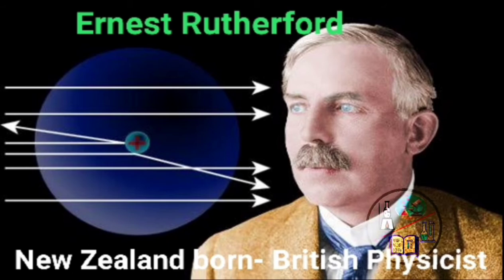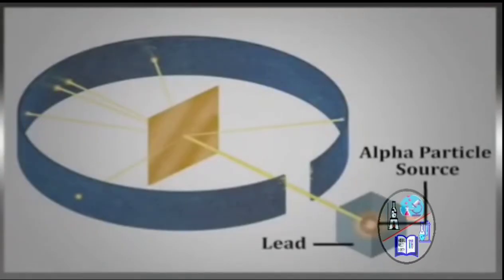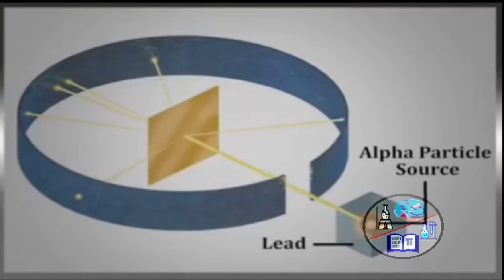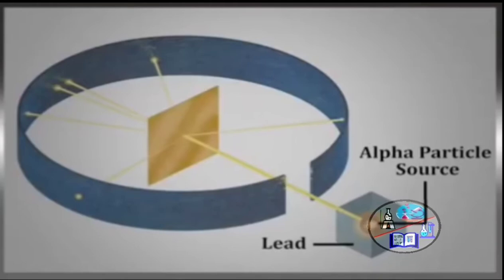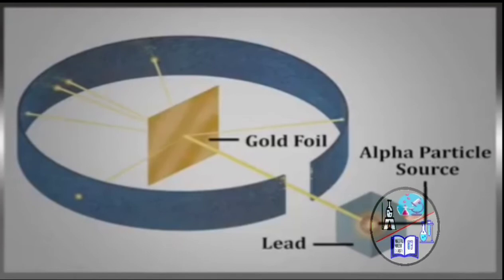Now let's know about the experimental setup that Rutherford used. In his experimental setup he used three most important things. The first is the alpha source enclosed in a lead box. Alpha source emits the alpha particles. Alpha particles are basically the positively charged particles emitted by radioactive substances like uranium, radium, etc. It is enclosed in a lead box so that it can produce straight stream of alpha particles and doesn't get influenced from the external radiations.